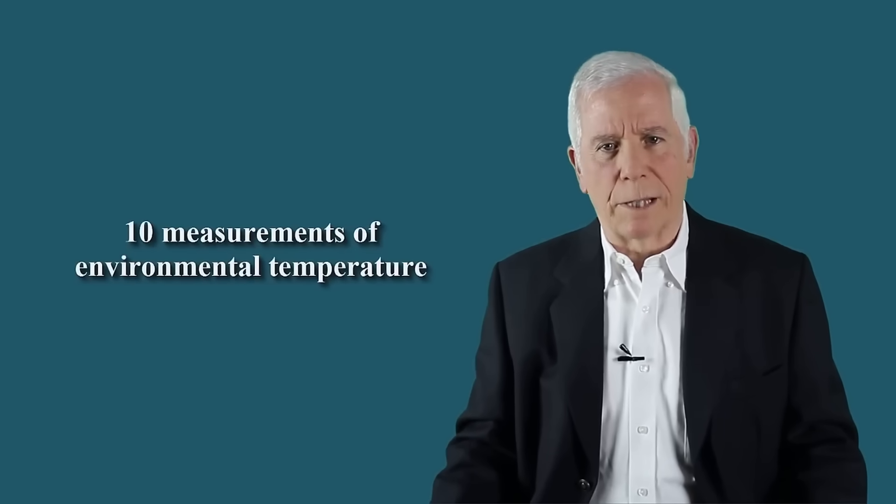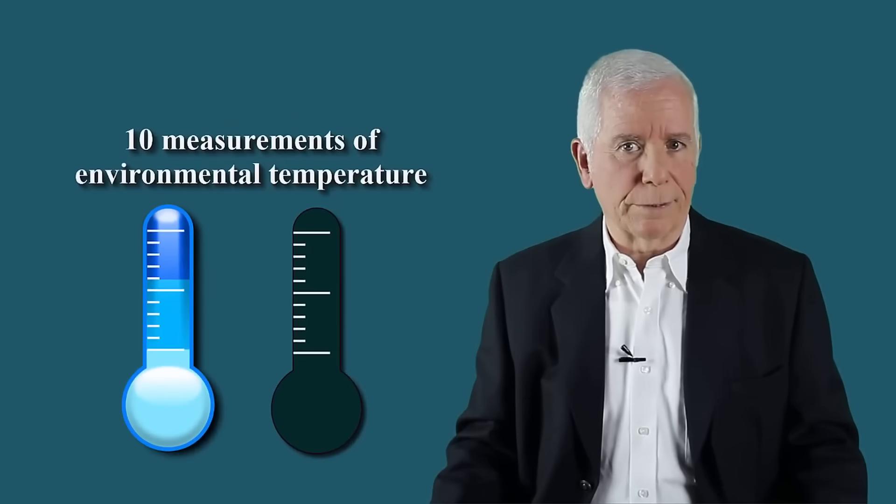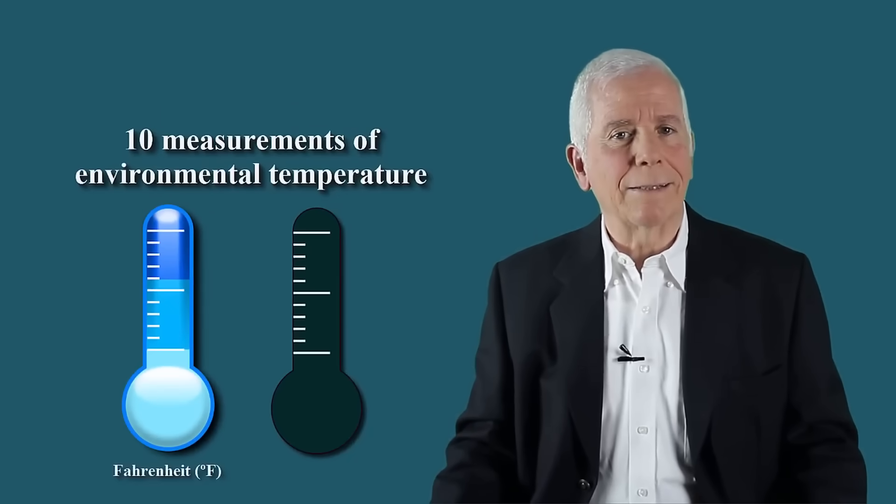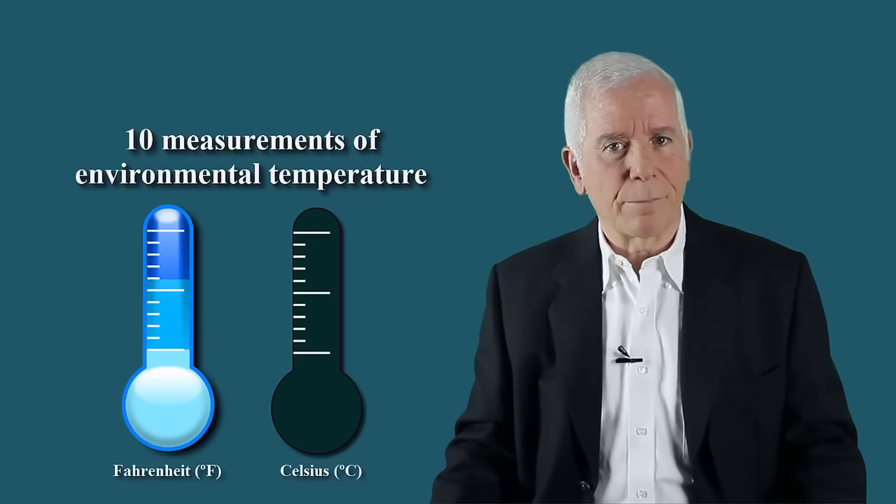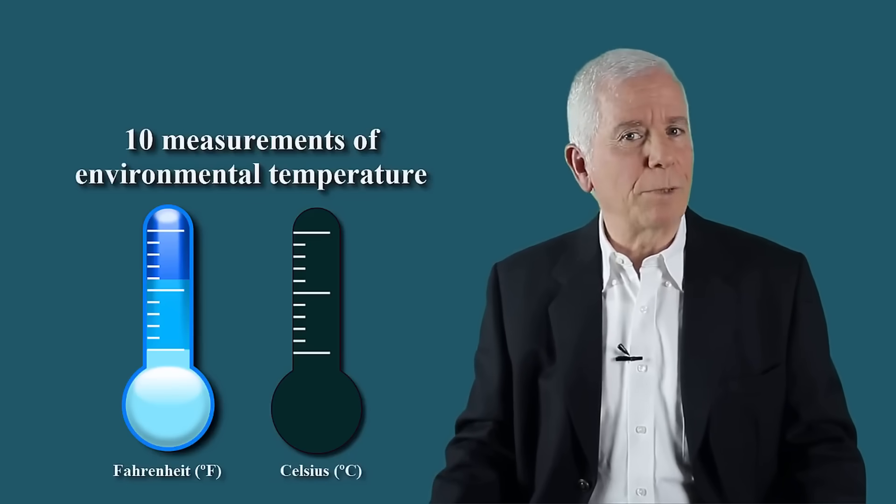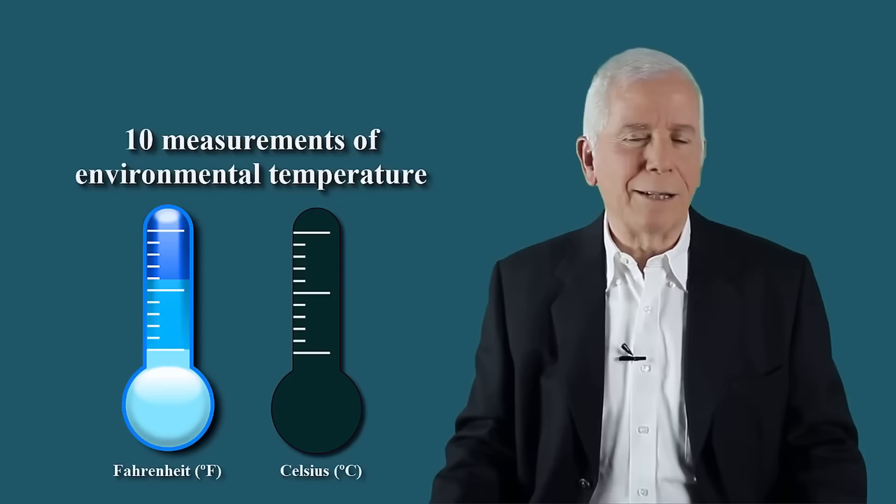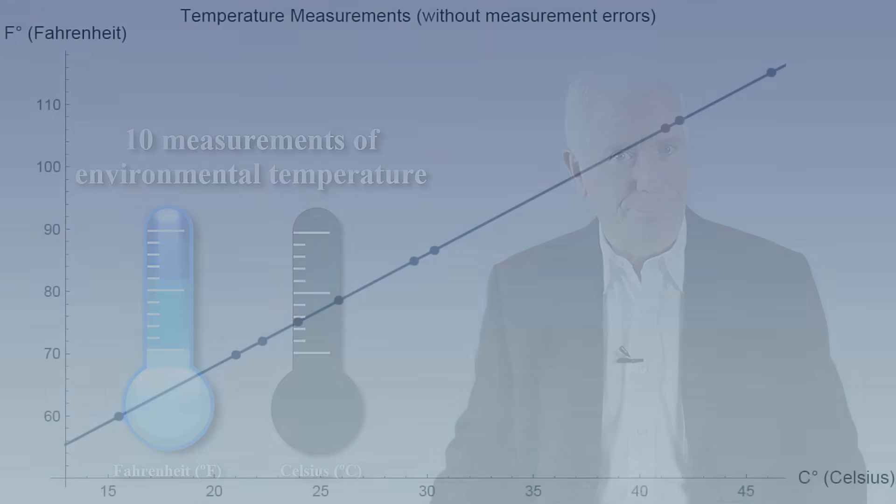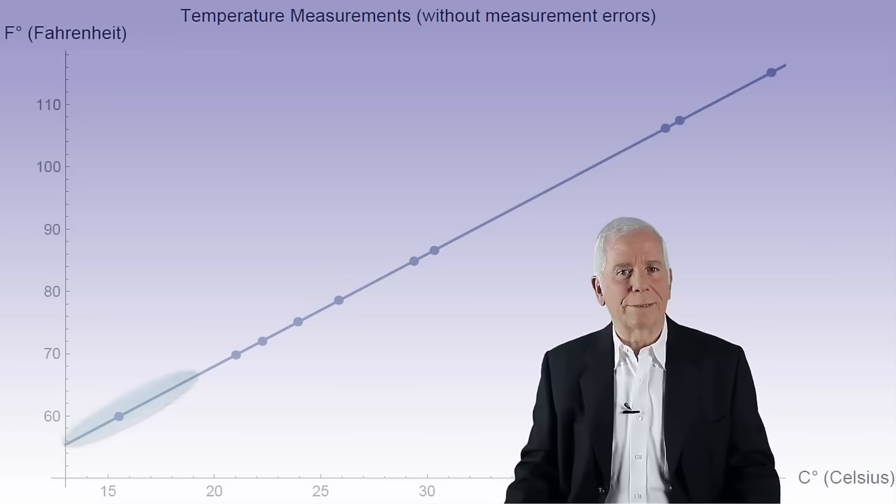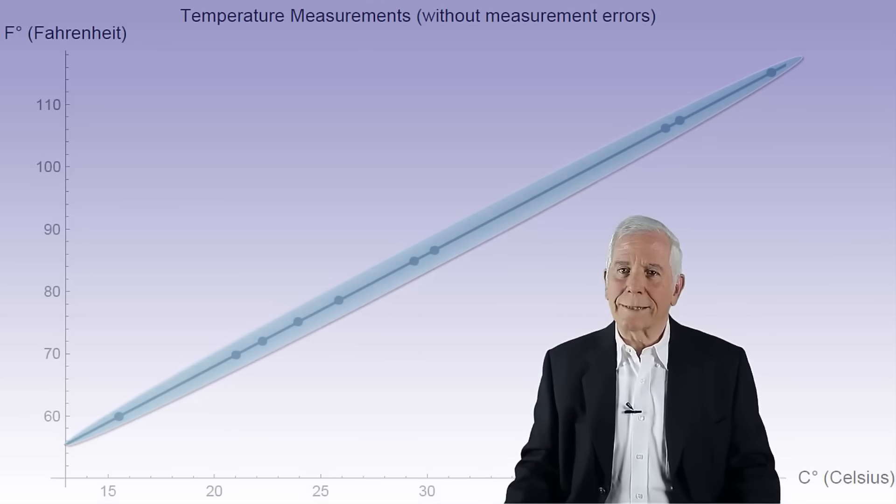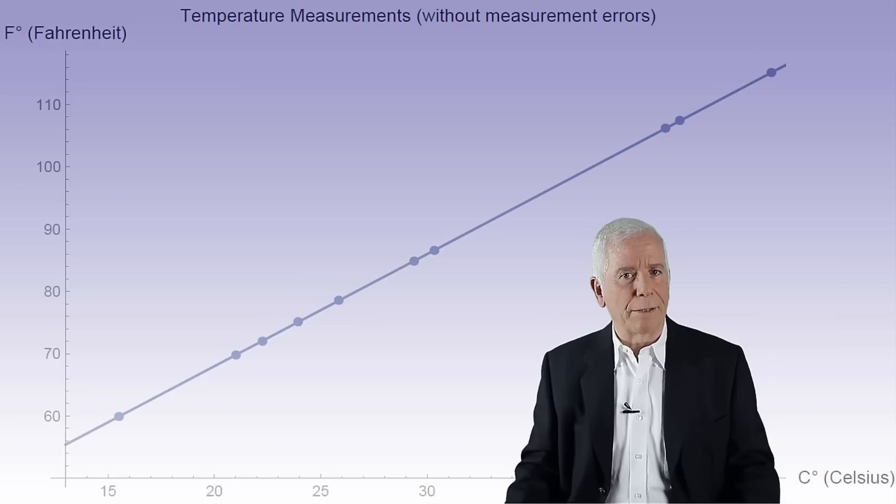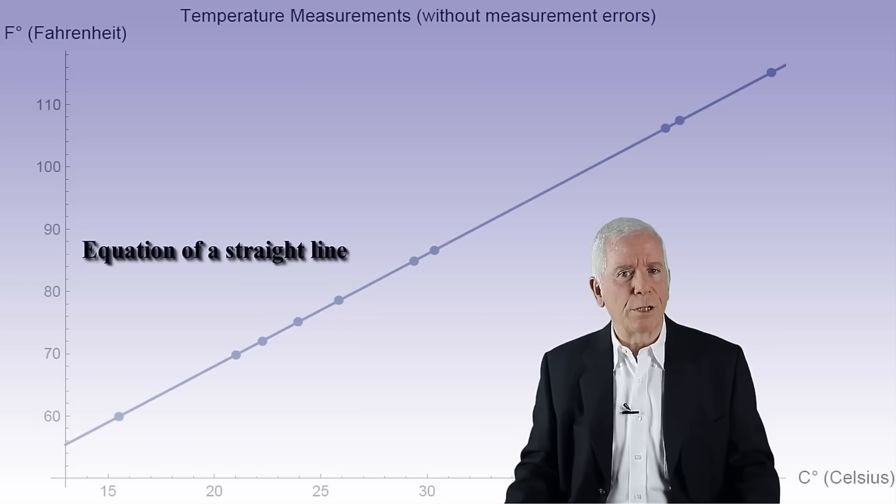Suppose that we make 10 measurements of environmental temperature on two thermometers, one on a Fahrenheit scale and another on a Celsius scale. If measurements were free of measurement error, drawing them in a plot would produce a curve that looks like this. The reason for the straight line is because transition from one scale to another is achieved by multiplying by a certain number and then adding another number. In other words, we obtain an equation of a straight line.